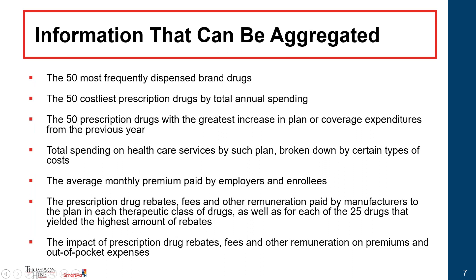The information that can be aggregated will most likely reside with your PBMs or TPAs. The reporting entities — whoever ultimately reports on the group health plan's behalf — will be able to compile information into a single report. There are three main categories: the top 50 lists discussing prescription drug utilization under the plan, group health plan spending information, and prescription drug rebate information.